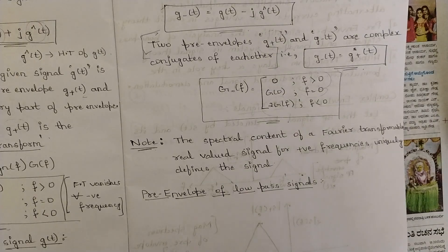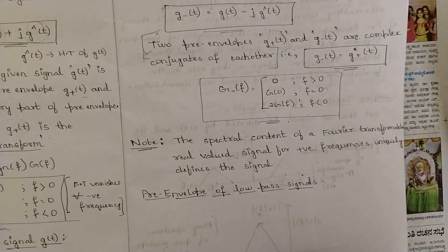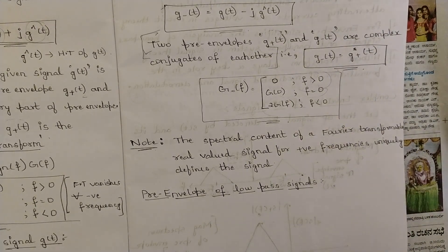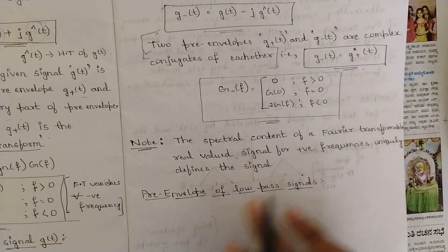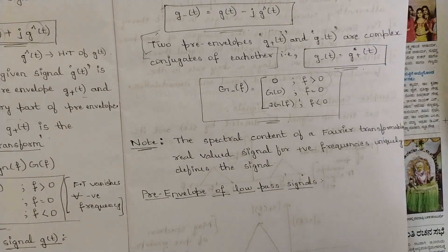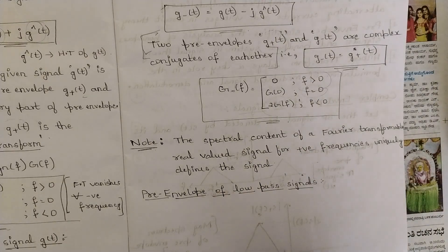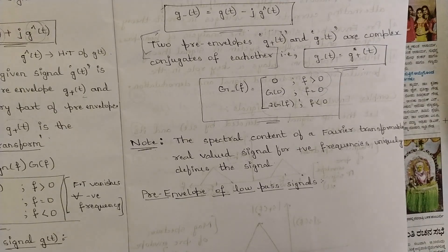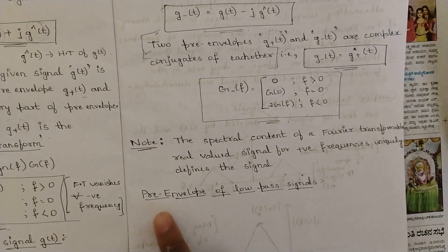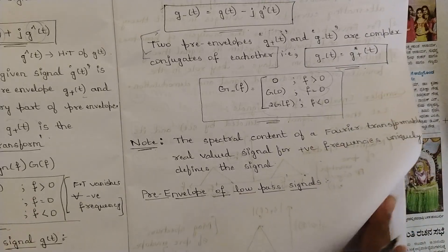When we eliminate all the negative frequencies and keep only the positive frequencies in a signal, the signal is said to be in a completely stable state without any formation of errors and the signal behaves in a smooth fashion. This was all about pre-envelope. I have discussed how it is related to the Hilbert transform, how to modify the frequency content, and how to determine the pre-envelope in time domain as well as frequency domain. Now let's discuss one more important concept: pre-envelope of low-pass signals.